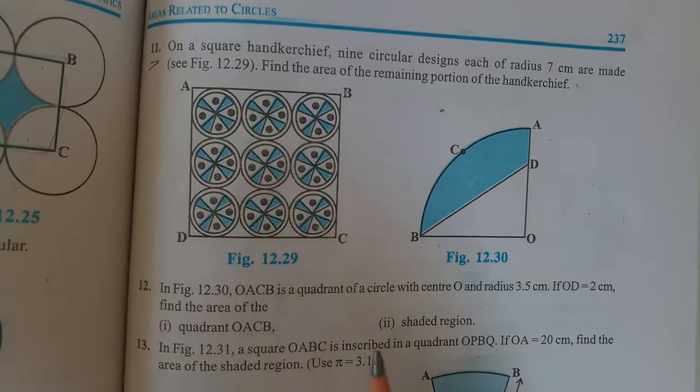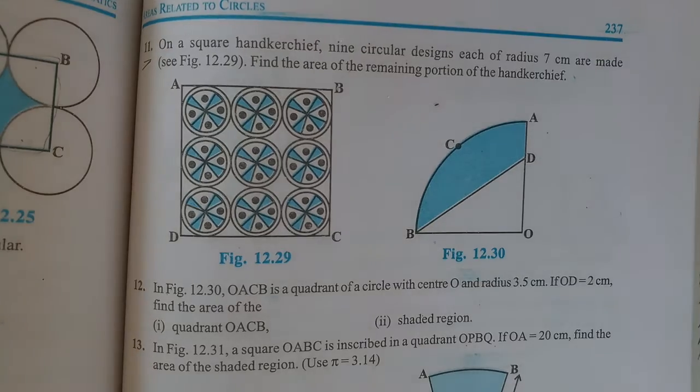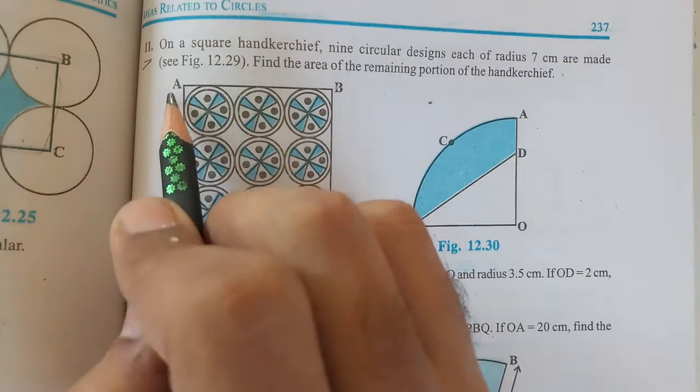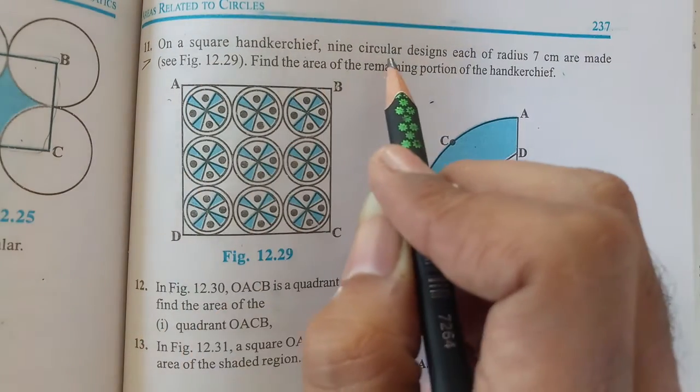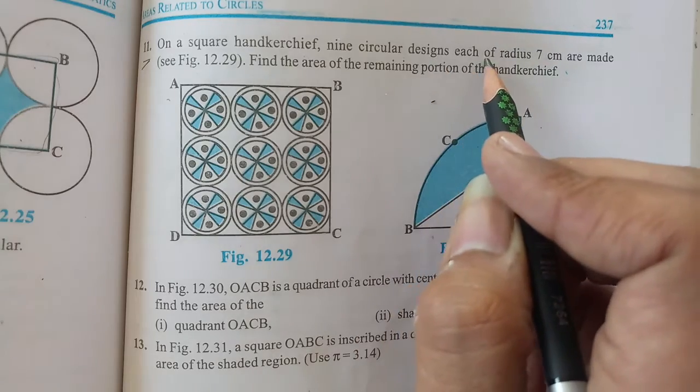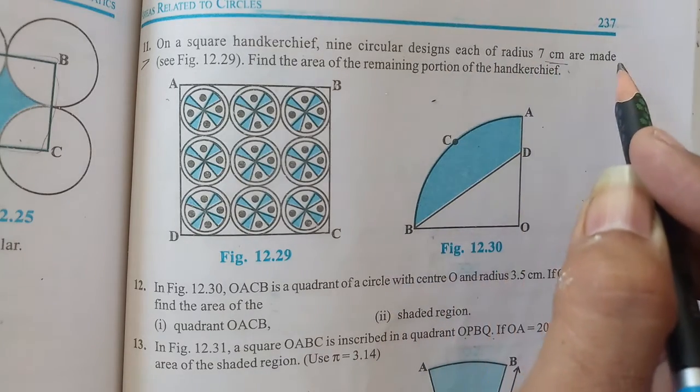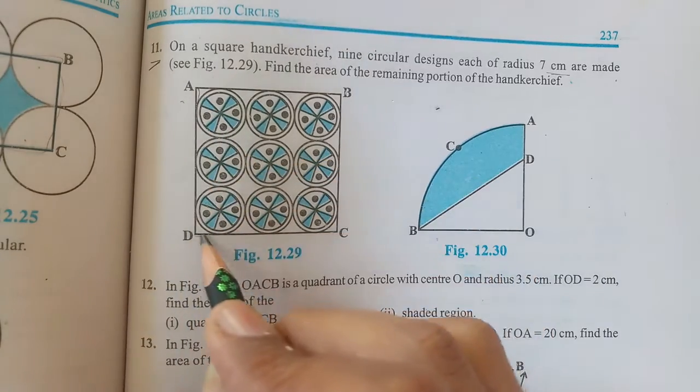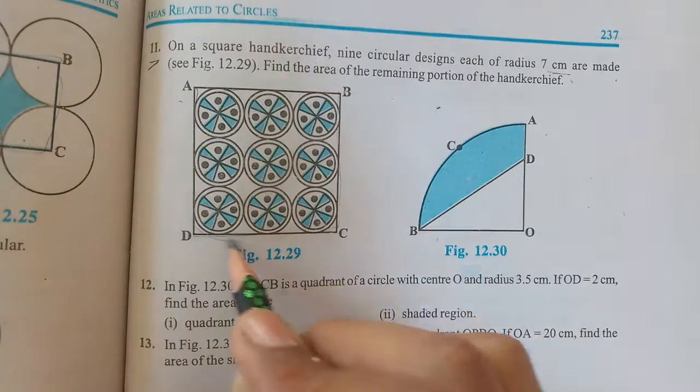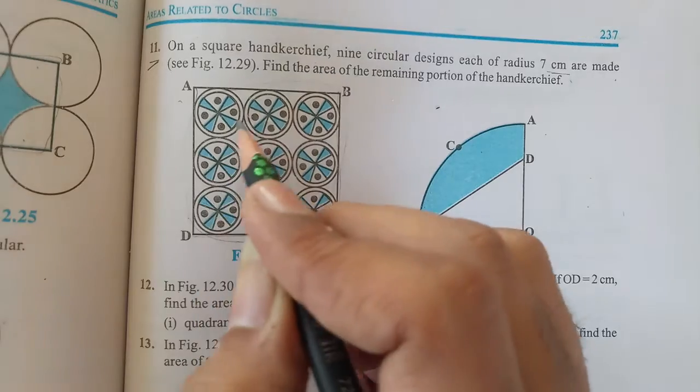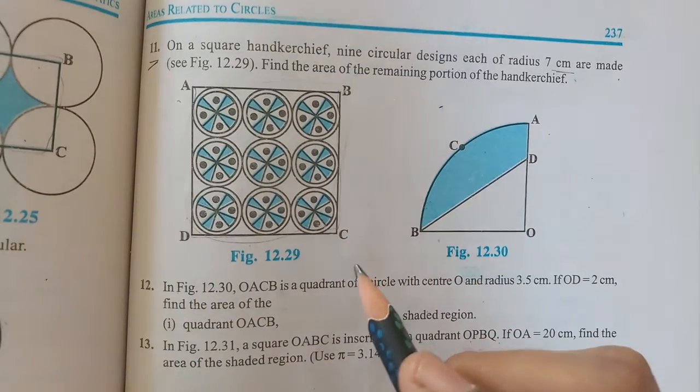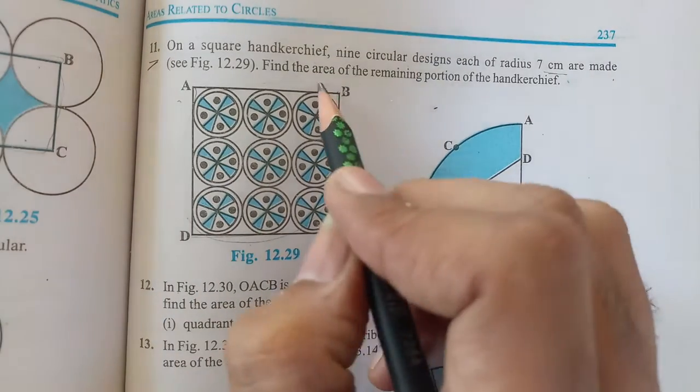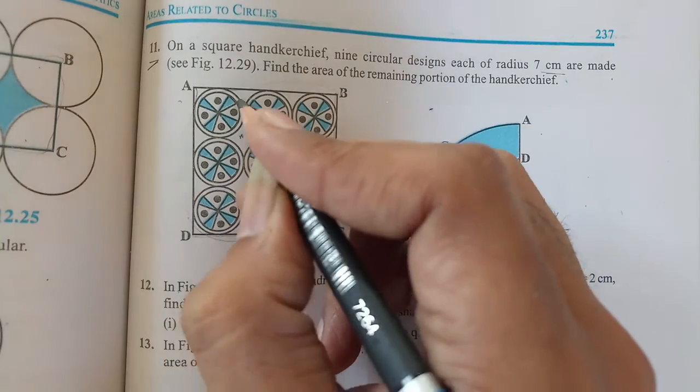Hello students, in this session we will continue with Exercise 12.3, question number 11. On a square handkerchief, nine circular designs each of radius 7 centimeter are made. We have here a square shaped handkerchief with nine circles forming a design. We need to find the area of the white portion remaining in the handkerchief.